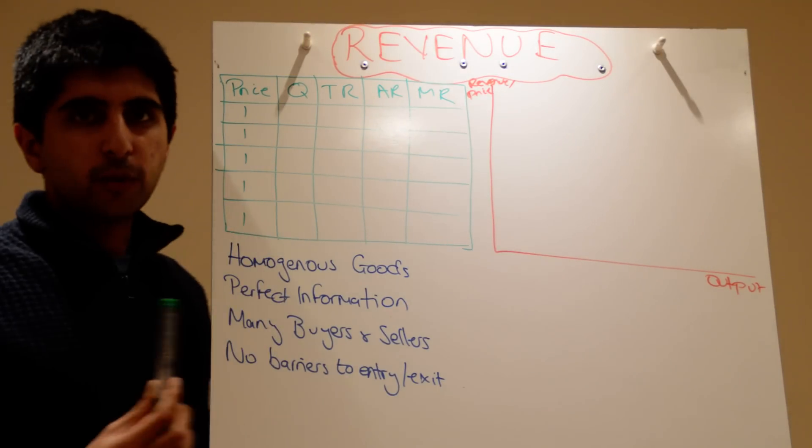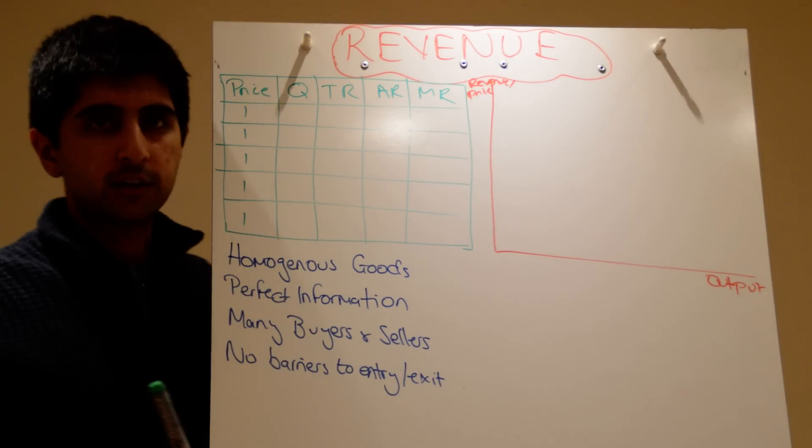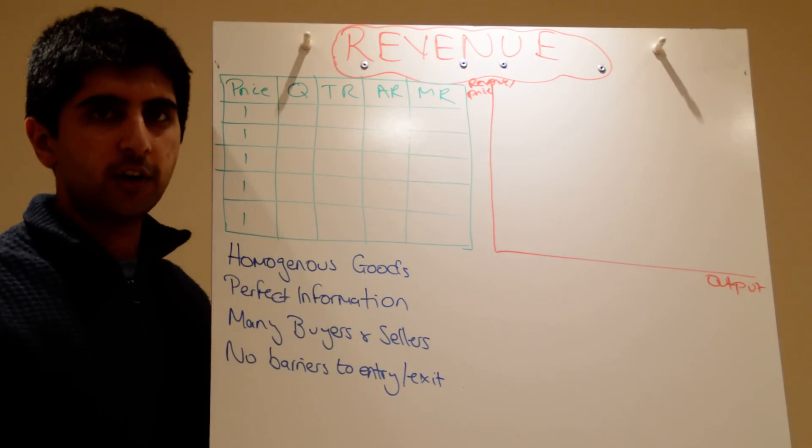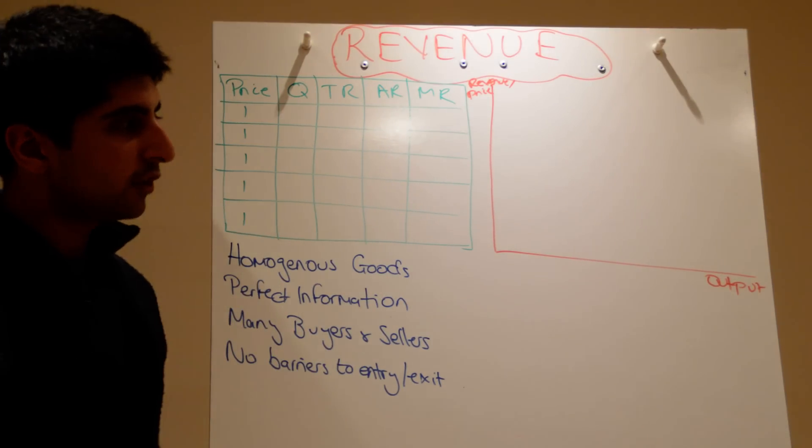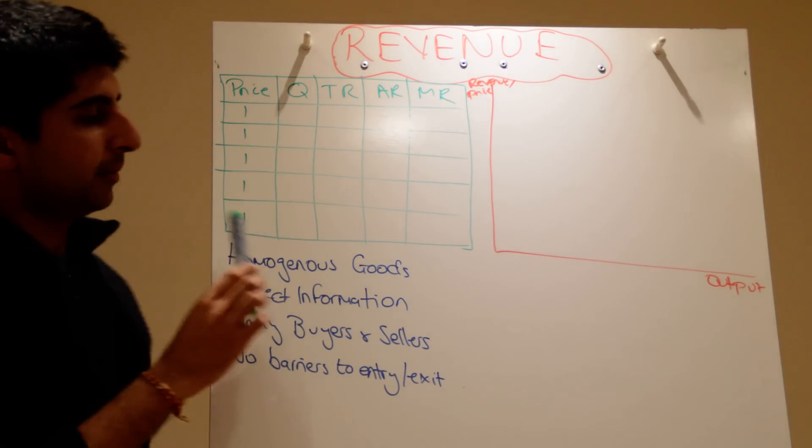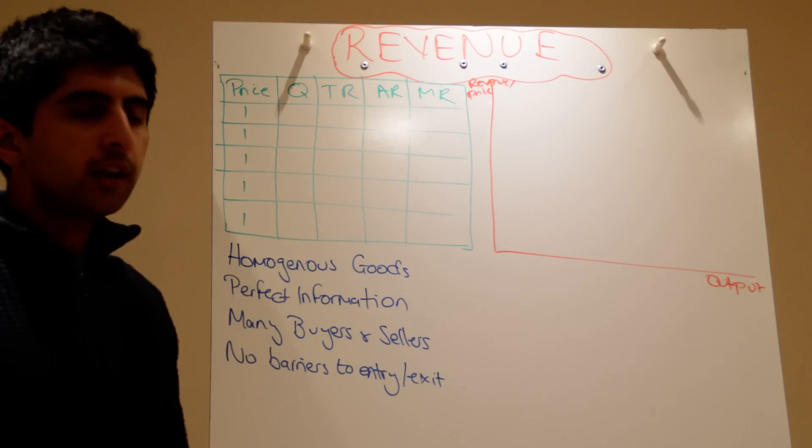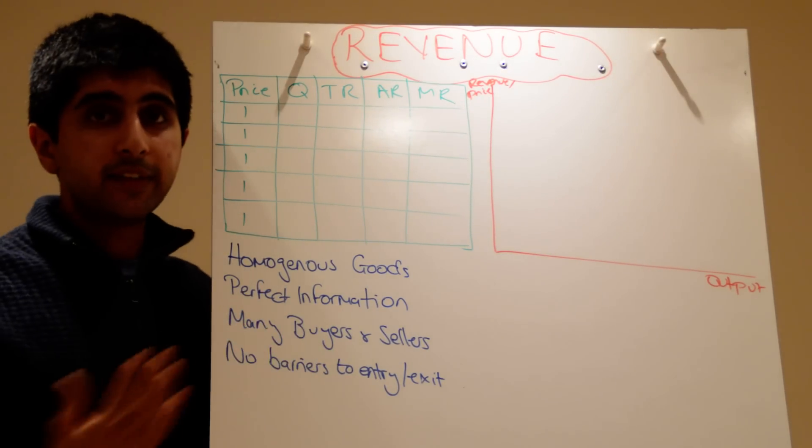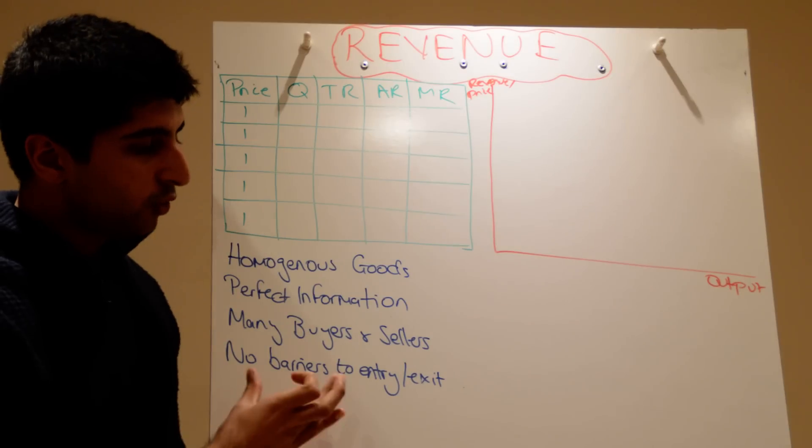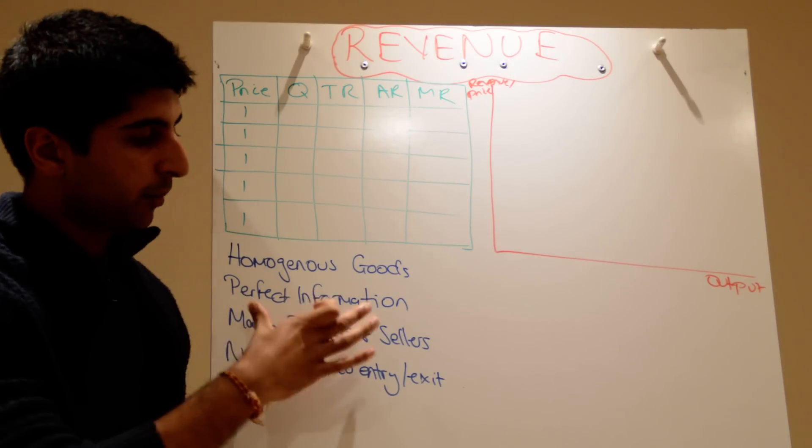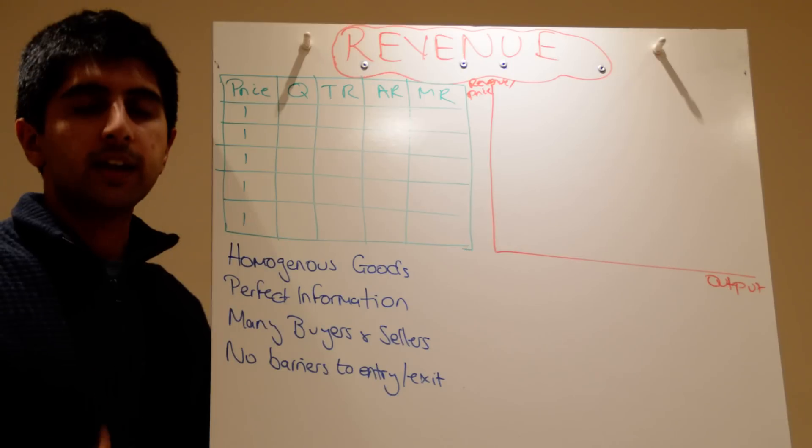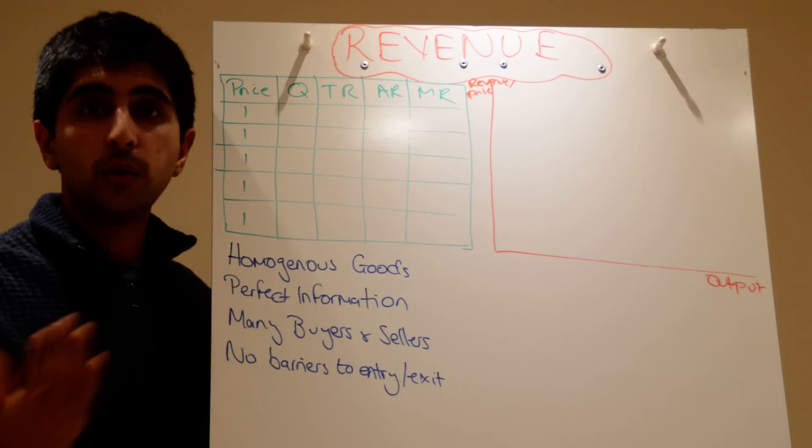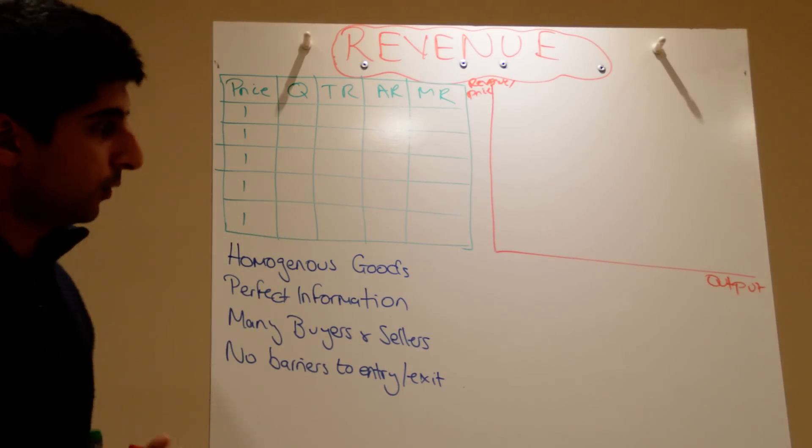That means firms that operate in these types of market structures are price takers. They've got no say over the price they charge for their products. They have to charge at one price. I've assumed that to be one pound here. So why can't they raise their price? Well if they try to raise their price there are so many other sellers in the market that consumers will just go to those sellers. They've got perfect information. They'll just switch their consumption very easily. In which case this firm who's raised their price will lose all their customers. It doesn't make any sense to do so.